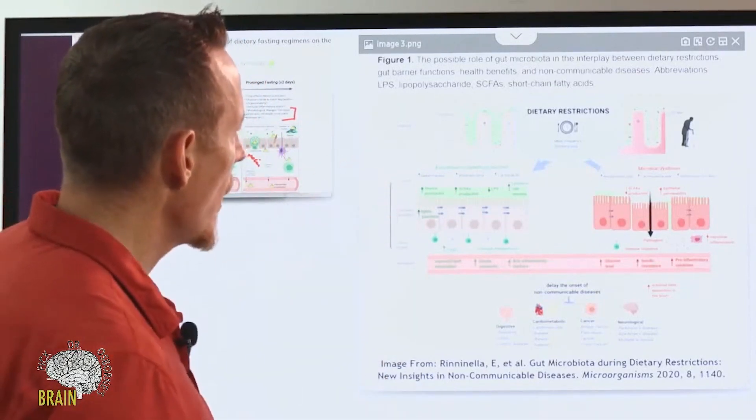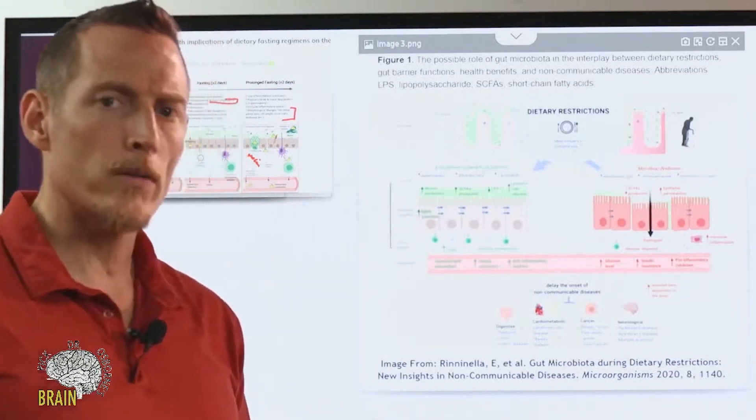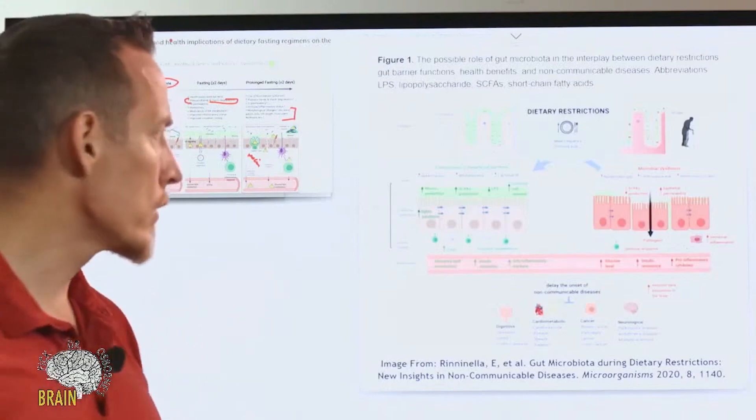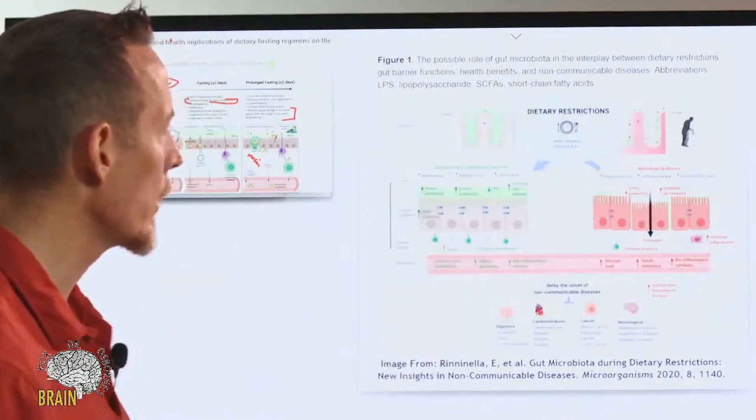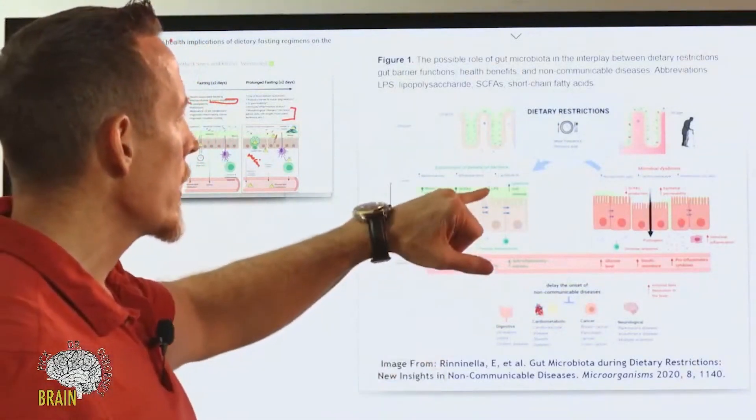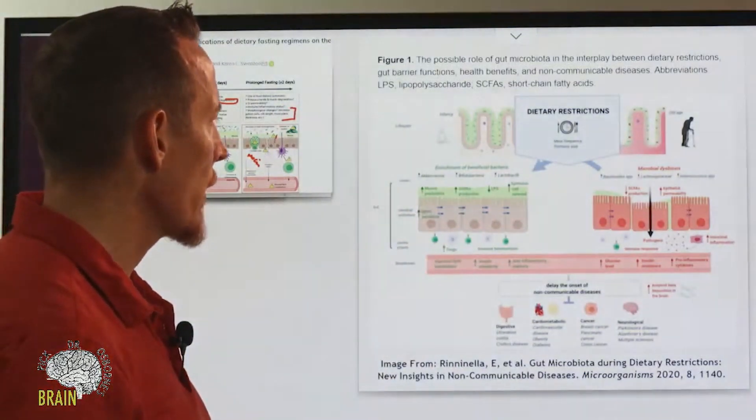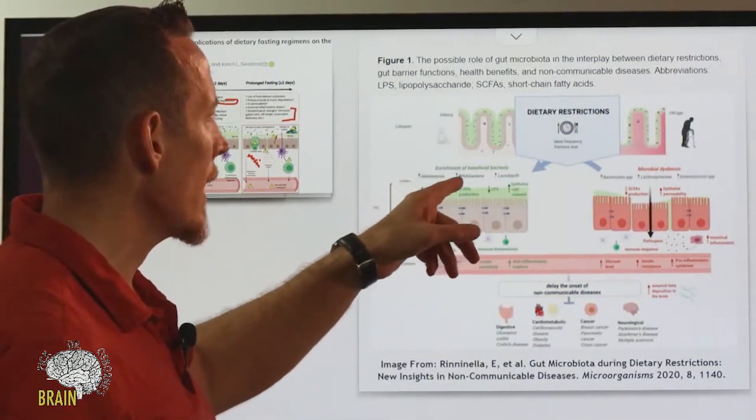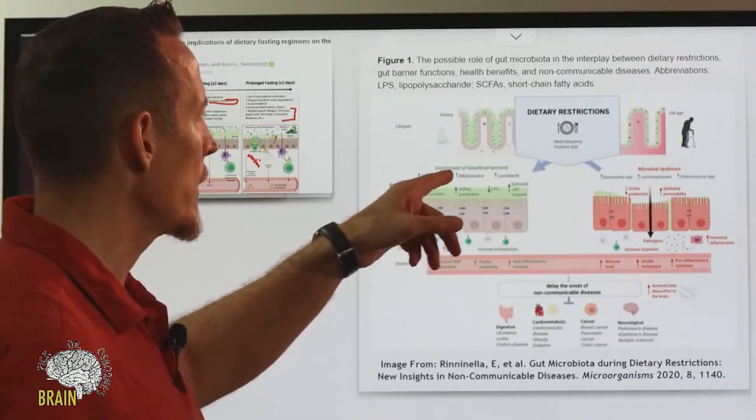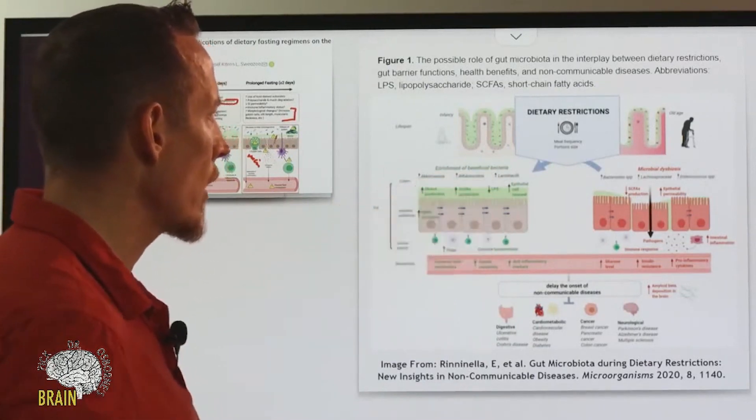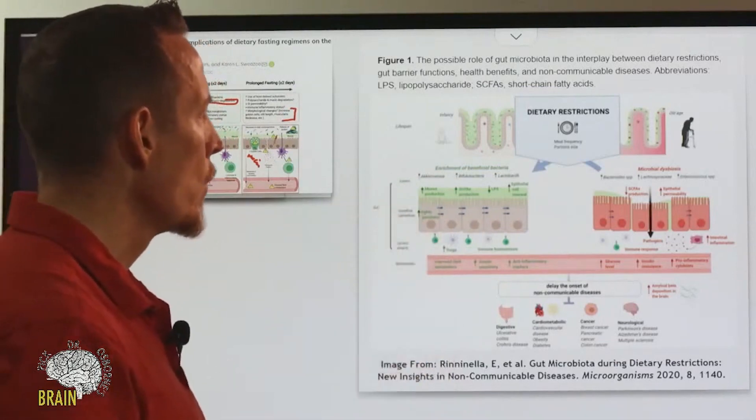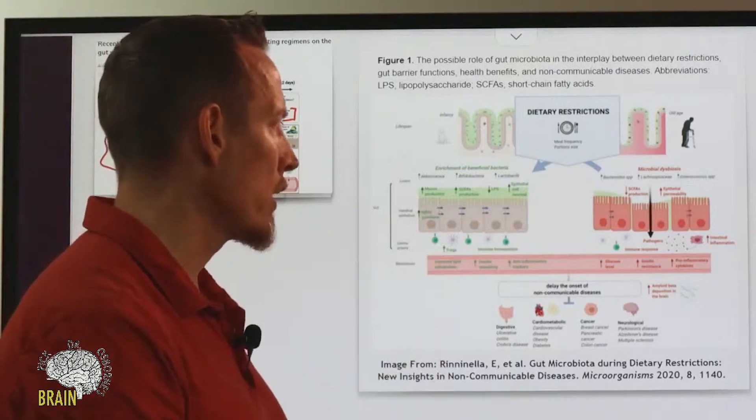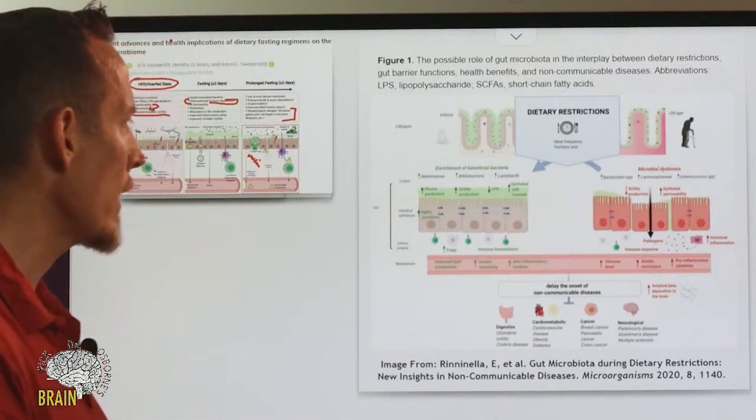Short chain fatty acids are the fuel substrate for your colon cells, what your colon cells use to make energy and make new cells. It's very important that we have adequate quantities of these. We know that it reduces a bacterial toxin called LPS. We know that it improves certain types of bacteria like your Akkermansia, your Bifido, and your Lactobacilli—all increased with intermittent fasting. We know the epithelial cells renew faster; they renew and regenerate better when you have fasting.